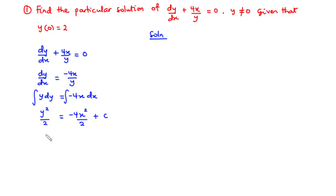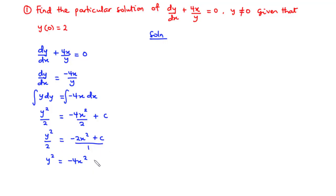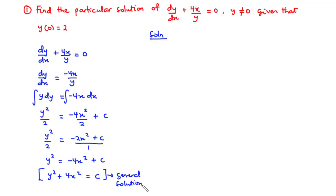Let's simplify further. We have y squared over 2 equals negative 2x squared plus c. Considering this over 1 and cross multiplying, y squared equals 2 times negative 2x squared, which is negative 4x squared, plus 2c. Since 2c is also a constant, we can leave it as c. Therefore, y squared equals negative 4x squared plus c, which simplifies to y squared plus 4x squared equals c. This is the general solution of the given differential equation.